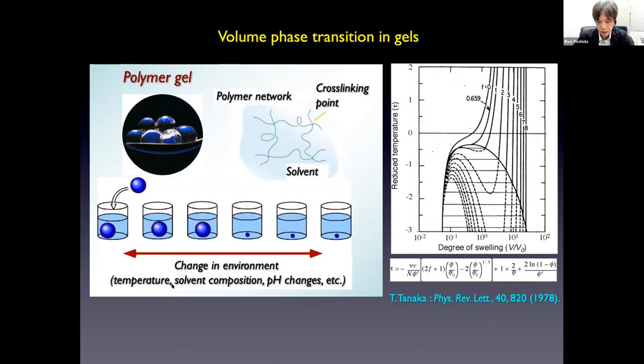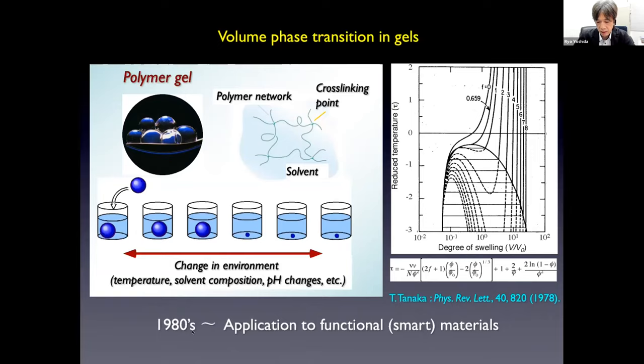It is well-known that many polymer gels show continuous or discontinuous swelling and deswelling changes in response to environmental changes, such as temperature changes, change in solvent composition, pH changes, electric field, magnetic field, and so on. These behaviors are also theoretically treated, and since the late 1980s, many researchers studied the application to functional or smart soft materials. These behaviors are called the volume phase transition.